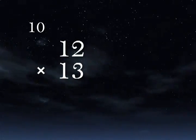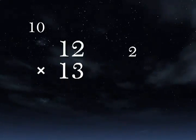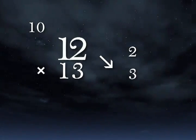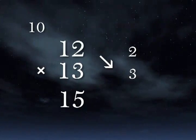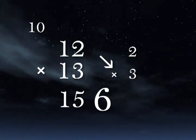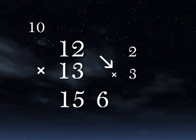12 is 2 more than 10, so we write 2. 13 is 3 more than 10, so we write 3. Working crosswise, 12 plus 3 is 15. That's the left side of the answer. 2 times 3 is 6. That's the right side, so the answer is 156.